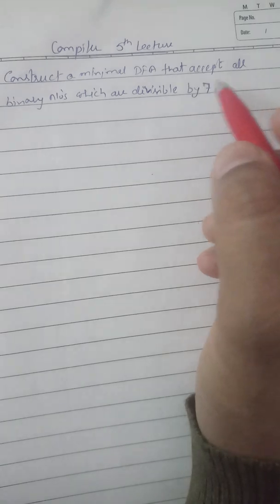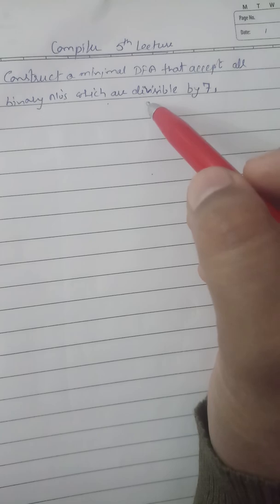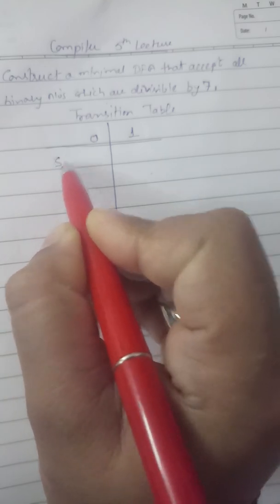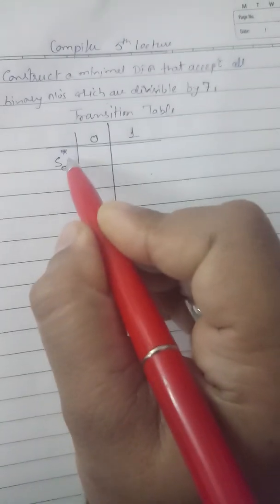We will construct a minimal DFA that accepts all binary numbers which are divisible by 5. As we have seen in our earlier lecture, we will make a minimal DFA with the help of a transition table. We start with the initial state s0 — because this is the initial state, we mark it with a star — and we write s0, s1.